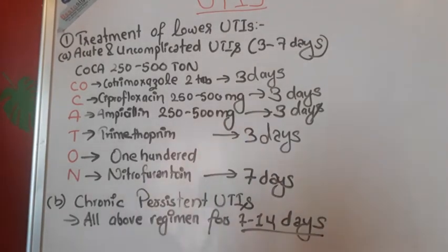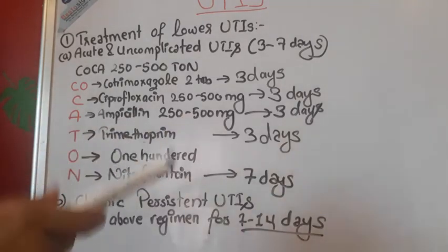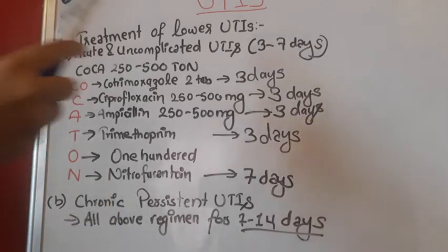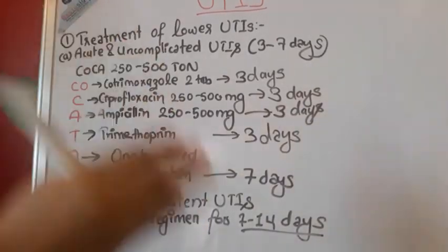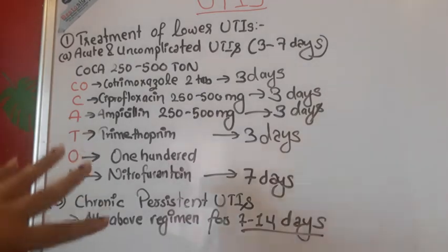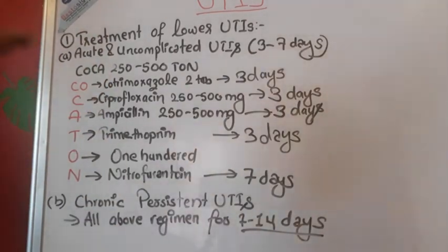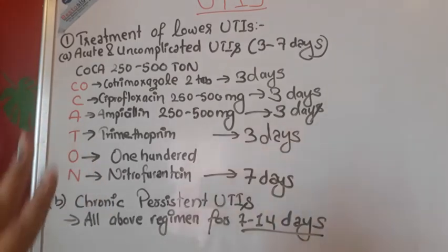Lower urinary tract infections usually include cystitis, urethritis, and prostatitis, whereas upper urinary tract infections include pyelonephritis, intrarenal abscess, and perinephric abscess. UTIs are also classified as complicated and uncomplicated. Uncomplicated UTIs occur in a structurally and functionally normal urinary tract — such as cystitis, lasting one to five days. Complicated UTIs involve abnormality in the structure or function of the urinary tract.